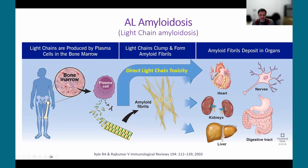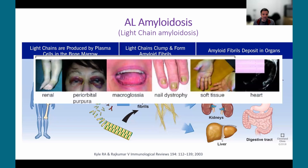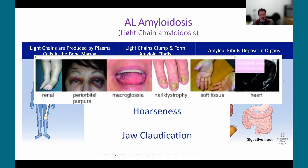On exam you can have macroglossia — an enlarged tongue due to direct infiltration — and periorbital purpura, which is bruising around the eyes related to fragility of the capillaries. Other symptoms seen in AL include hoarseness and jaw claudication.